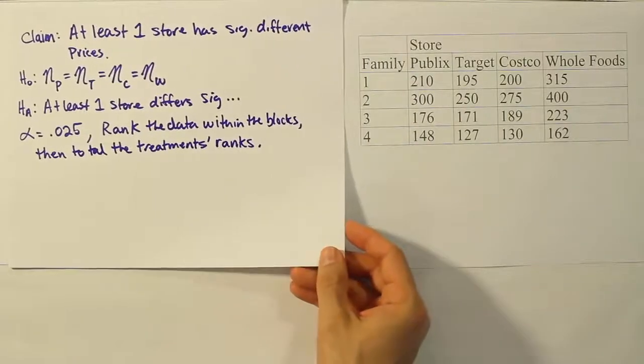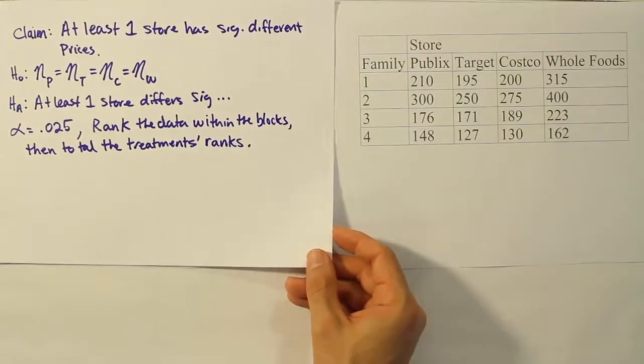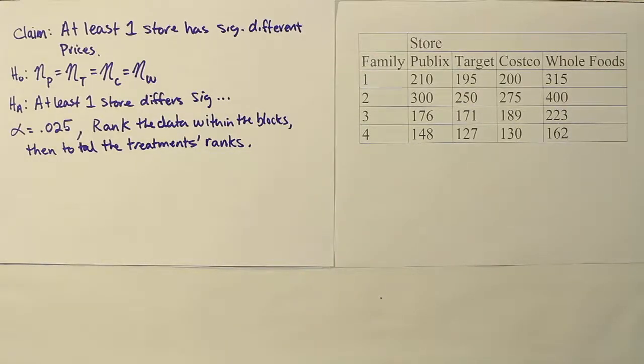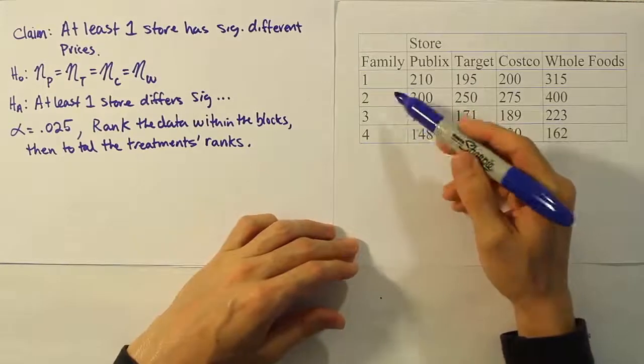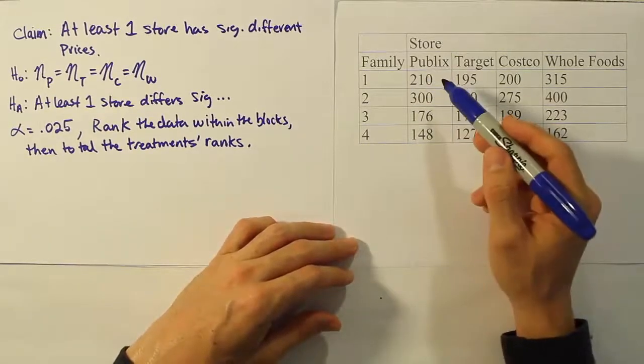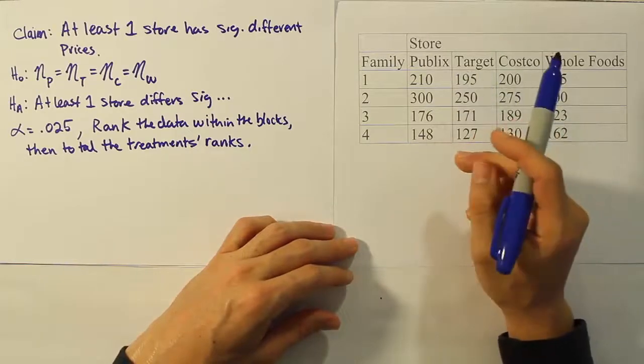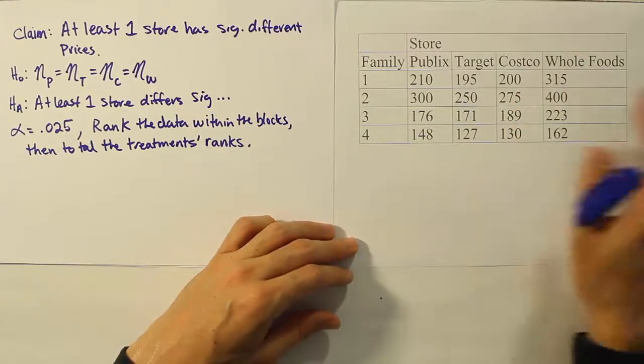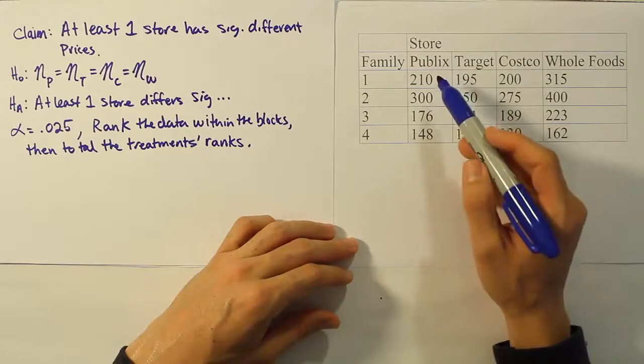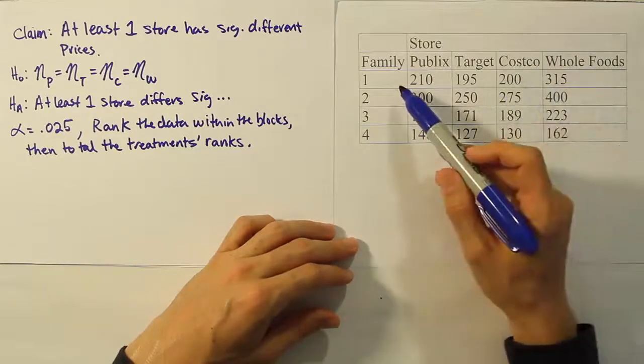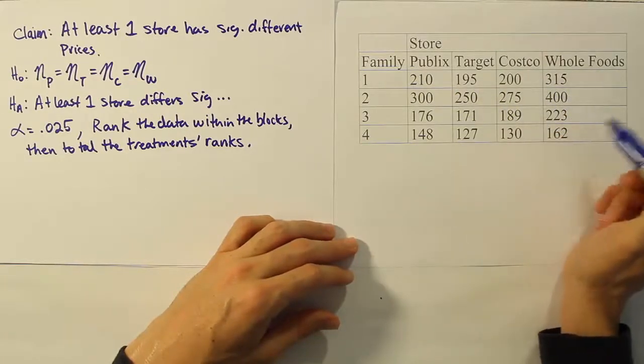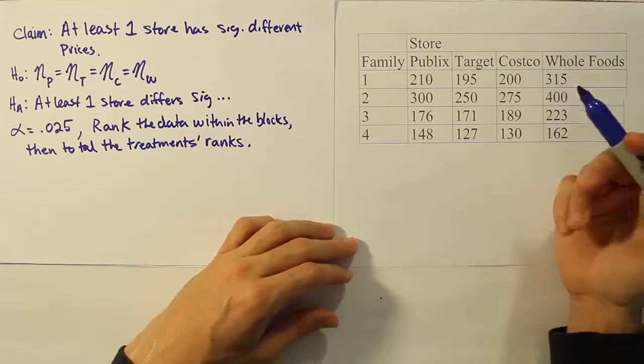All we have to do is go across through the different blocks and rank the different values that we see across the blocks. The blocks here are going to be these four families. They're four different families that we sent to the stores to do their shopping. Their results are set up as the blocks because we know the families will have different grocery prices. We care whether the stores are more expensive for each family to go to.